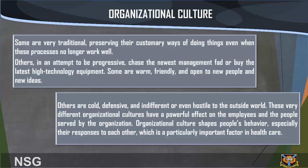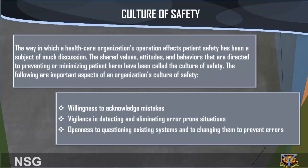Organizational culture shapes people's behavior, especially their responses to each other, which is a particularly important factor in healthcare. Culture of safety: the way a healthcare organization's operations affect patient safety has been a subject of much discussion. The shared values, attitudes, and behaviors directed to preventing or minimizing patient harm are called the culture of safety. Important aspects include willingness to acknowledge mistakes, vigilance in detecting and eliminating error-prone situations, and openness to questioning existing systems and changing them to prevent errors.